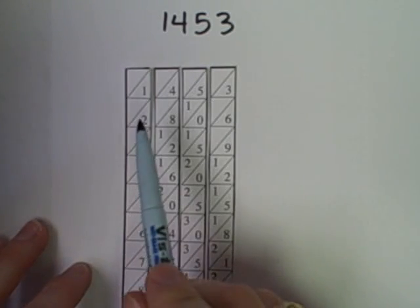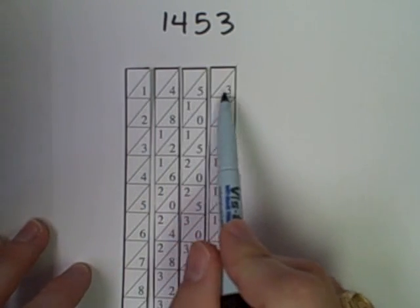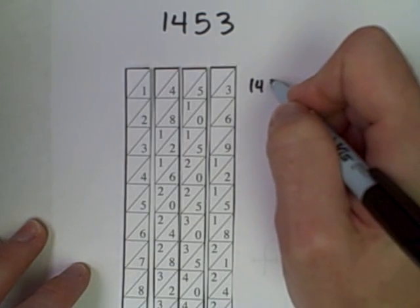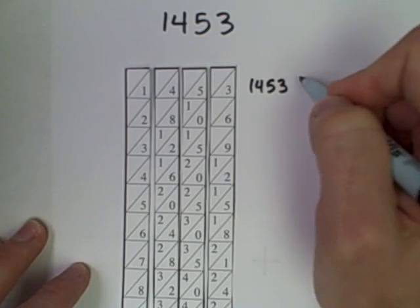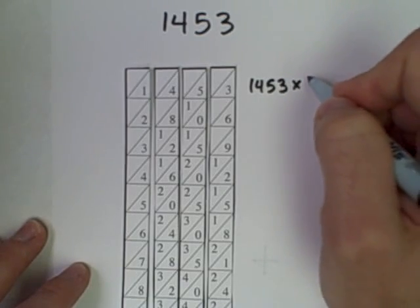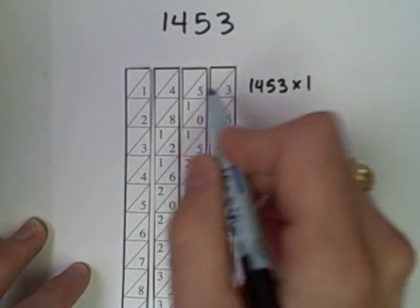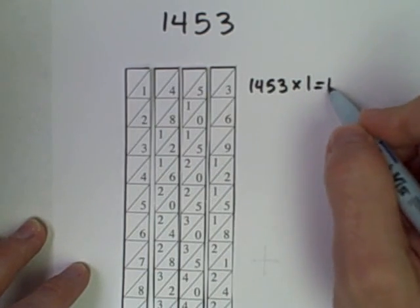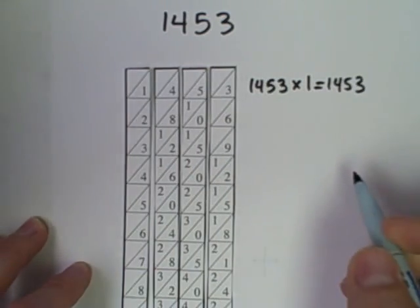I've taken Napier's rods for 1, 4, 5, and 3, and I want to show you how we can get multiples of 1,453. 1,453 times 1 is just this first row: 1, 4, 5, 3. 1,453.